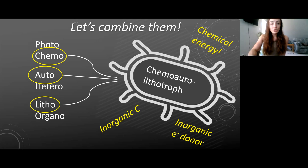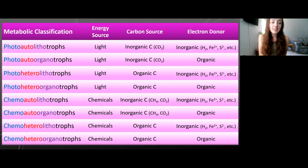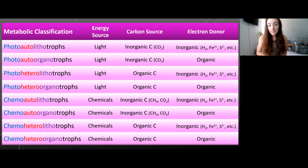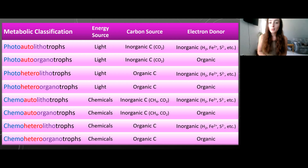I've made a hopefully helpful table showing all the different types of phototrophy and chemotrophy respectively, combined with all the different types of auto versus hetero and litho versus organotrophy, along with their energy source, carbon source, and electron donor in each case. You can pause the screen and look at it for as long as you'd like if you need to use it for reference.